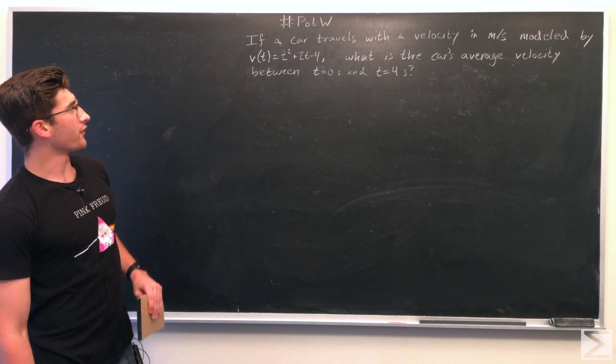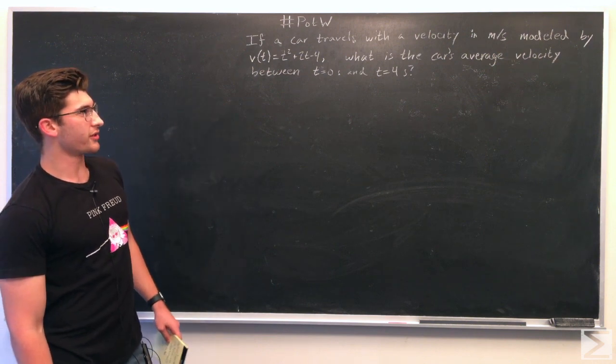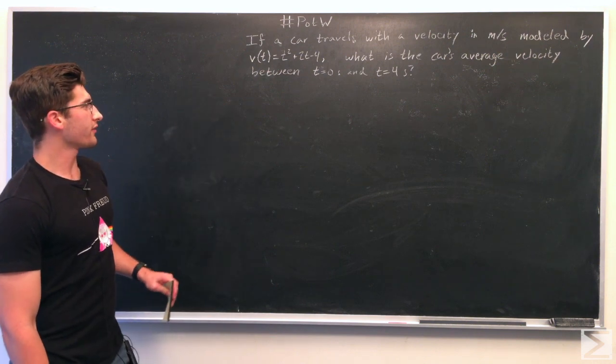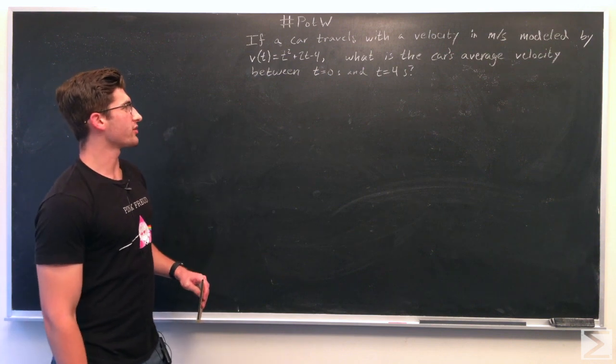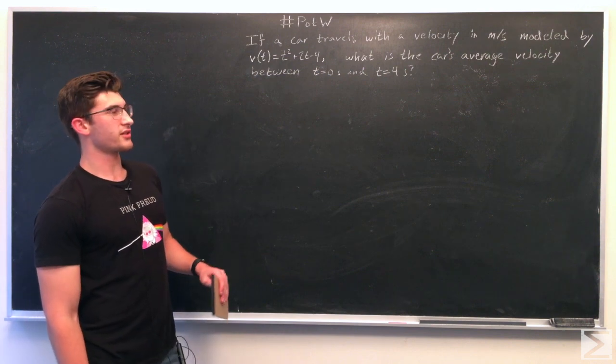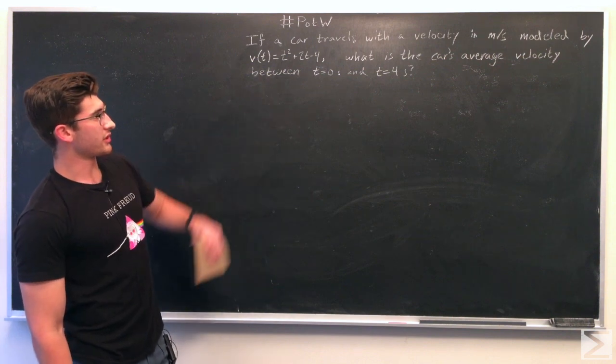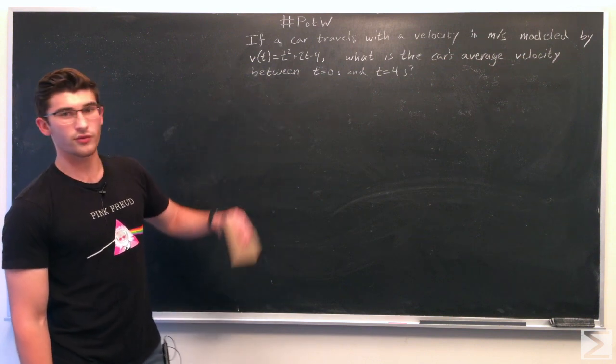we're given a question that asks, if a car travels with a velocity in meters per second, modeled by v of t equals t squared plus 2t minus 4, what is the car's average velocity between times t equals 0 seconds and t equals 4 seconds?